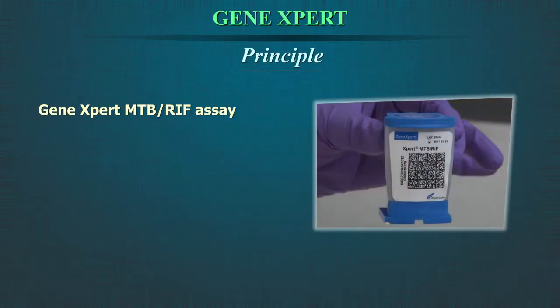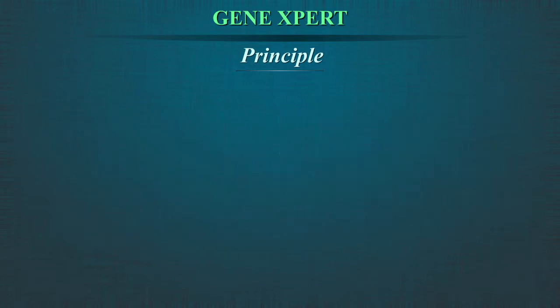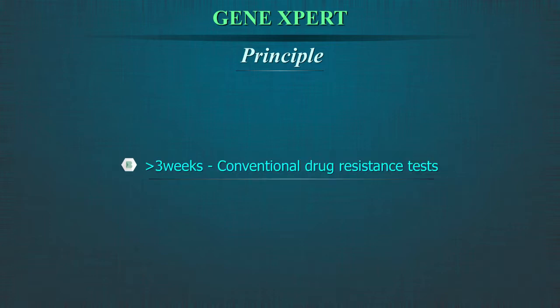The GeneXpert MTB/RIF assay is a nucleic acid amplification test which simultaneously detects DNA of Mycobacterium tuberculosis complex and resistance to rifampicin in less than two hours. In comparison, standard cultures can take two to six weeks for Mycobacterium tuberculosis complex to grow, and conventional drug resistance tests can add three more weeks.